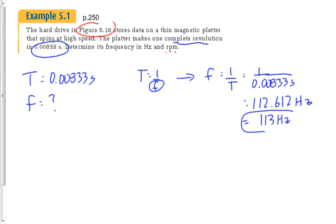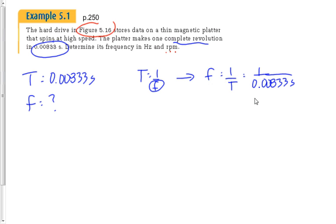Now let's find the frequency in revolutions per minute. We have 120 revolutions per second. There are 60 seconds in a minute. If you're unsure whether to multiply or divide, think about it: it makes more revolutions in a minute than in a second, so we multiply by 60. That gives us 7,200 RPM.